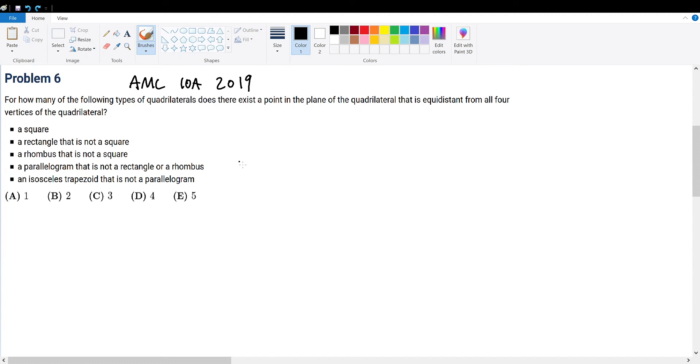AMC 10A 2019 problem 6. For how many of the following types of quadrilaterals does there exist a point in the plane of the quadrilateral that is equidistant from all four vertices of the quadrilateral?